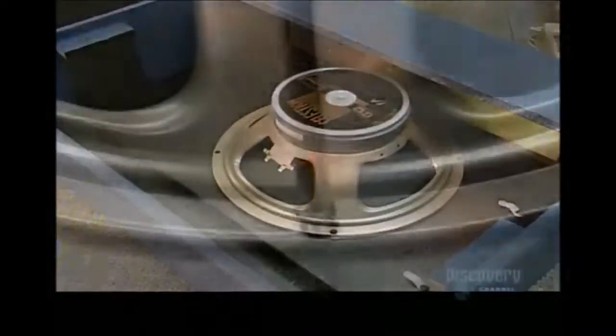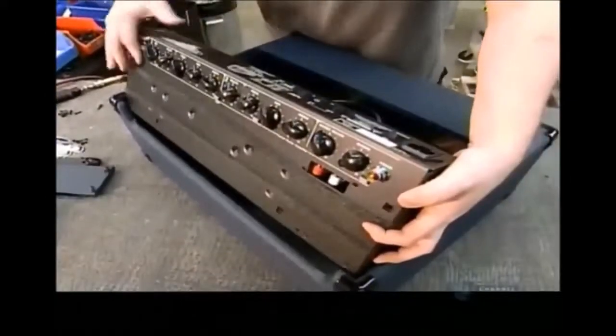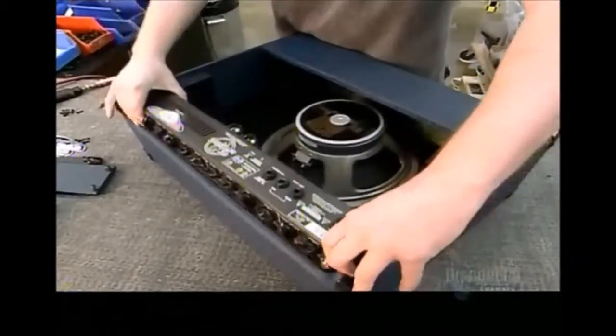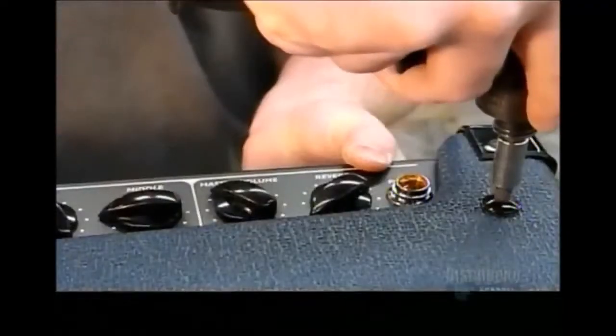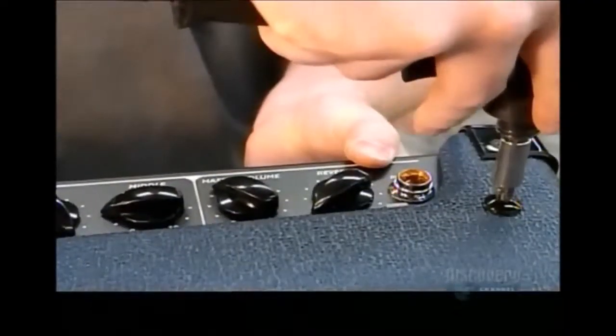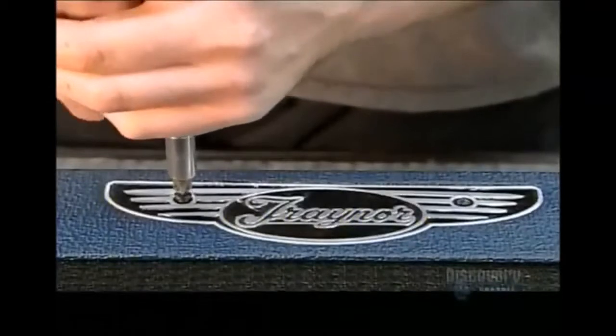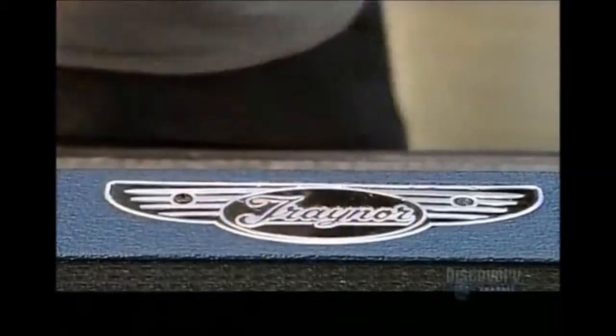As the guitar's electrical signal runs through the amp, part of the electrical signal diverts to one end of the spring, vibrating it. The spring's other end picks up this vibration and sends it back through the amp as a delayed signal. That reverberation combines with the original signal to produce a bigger sound.